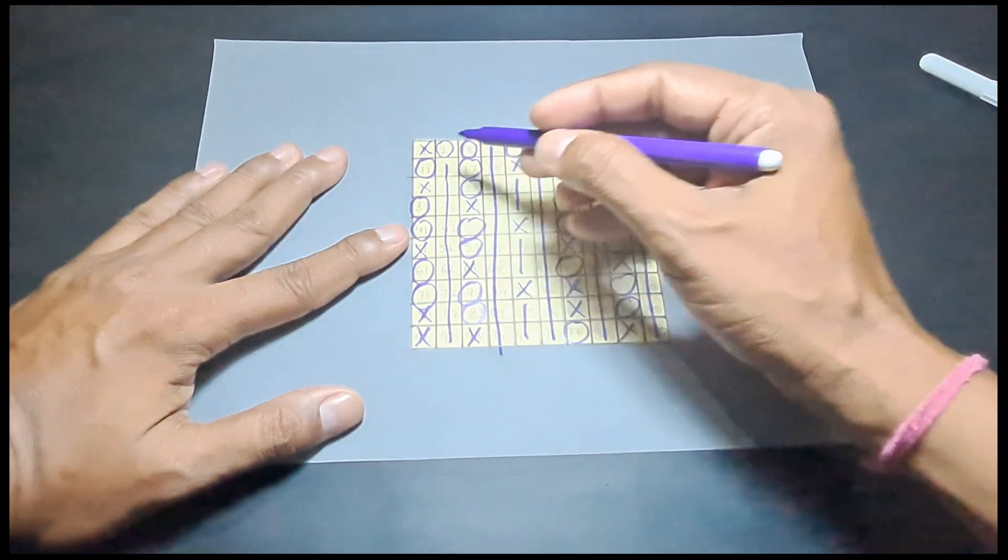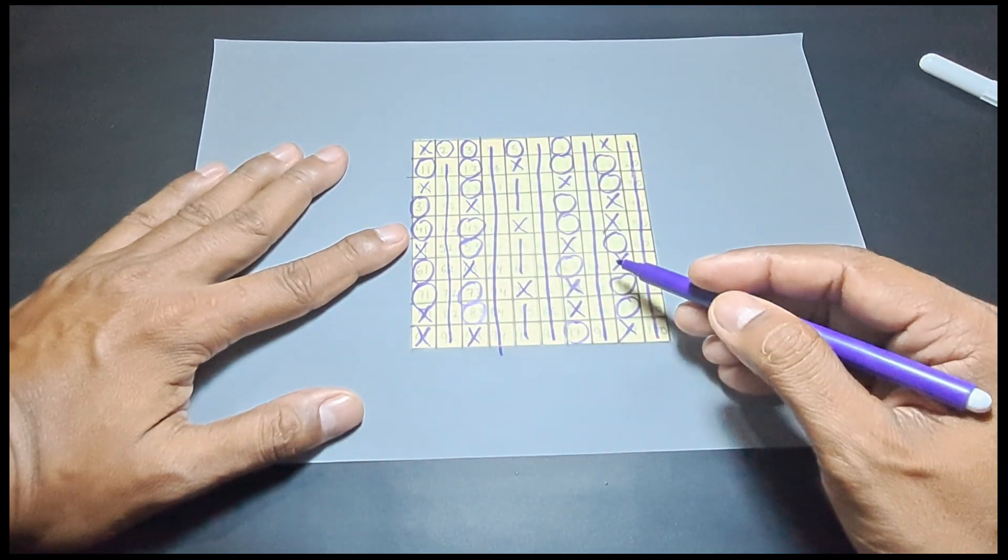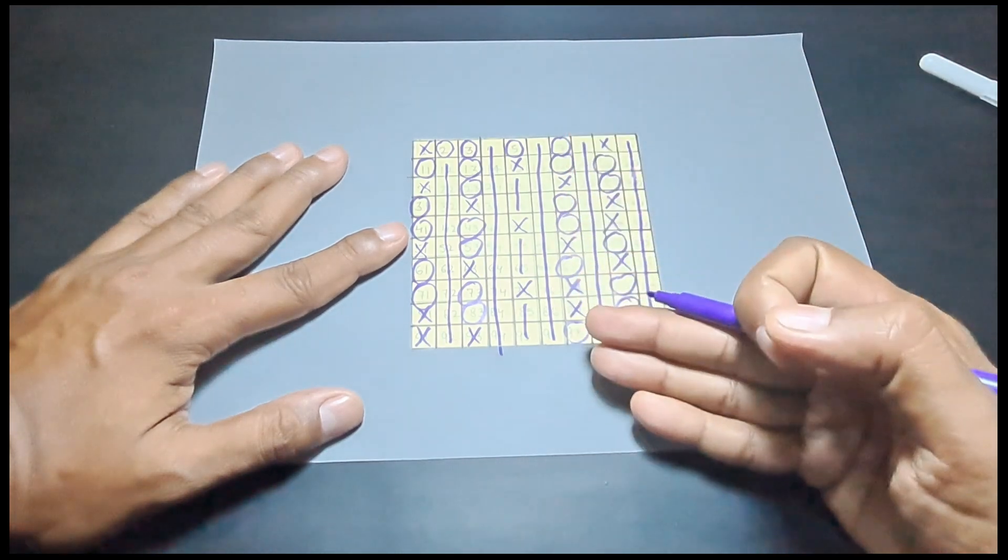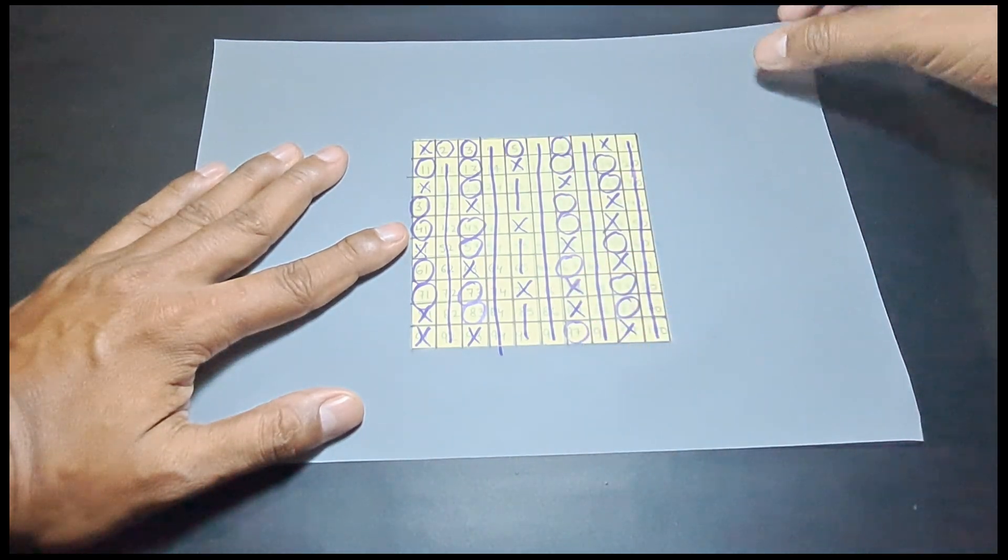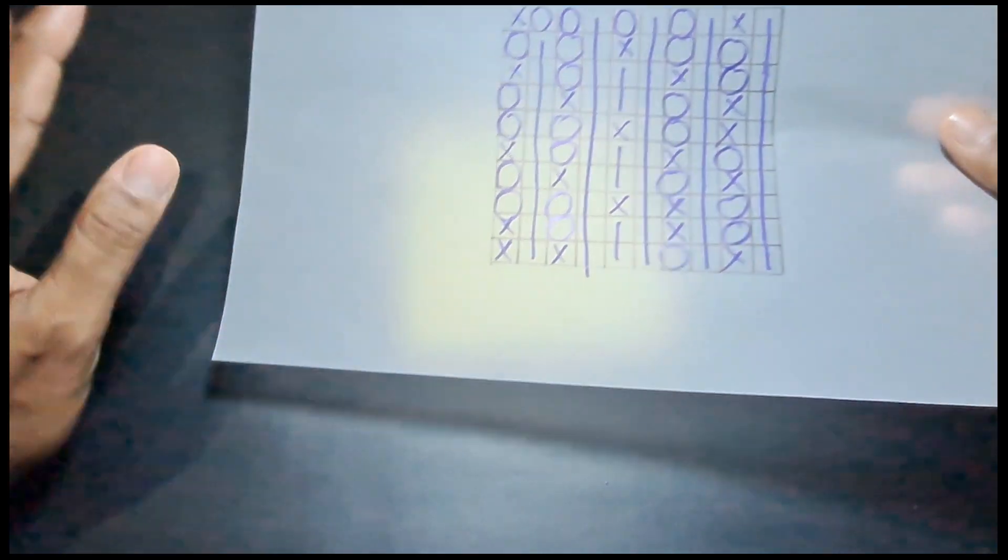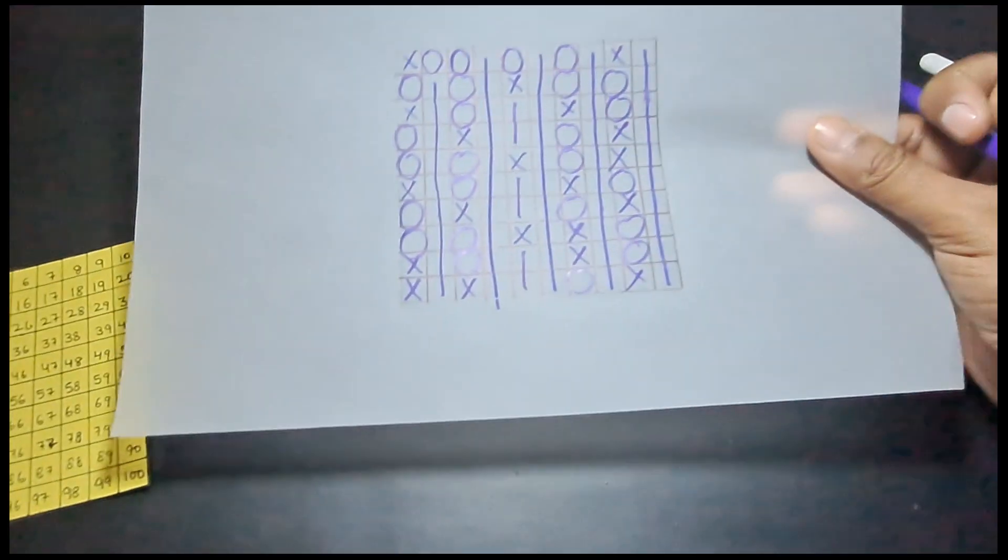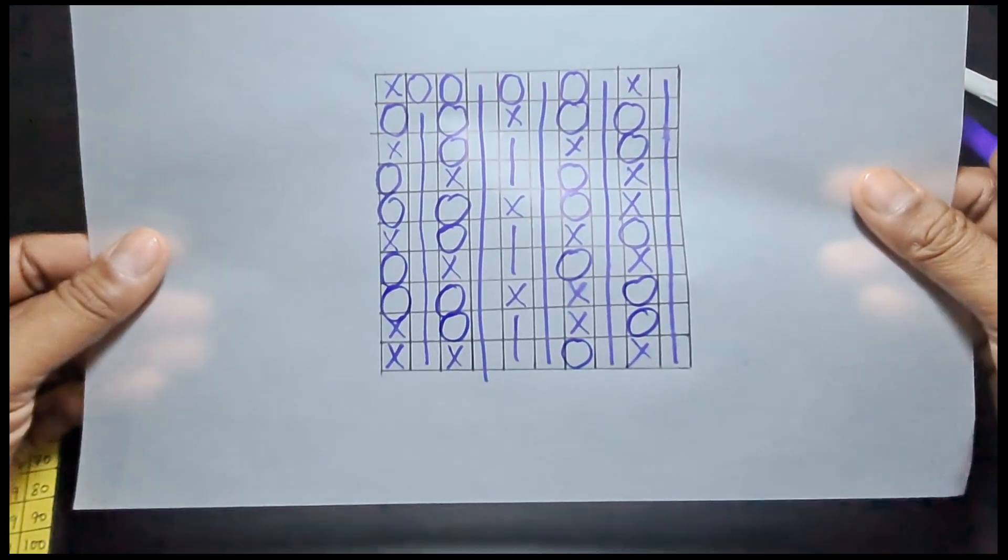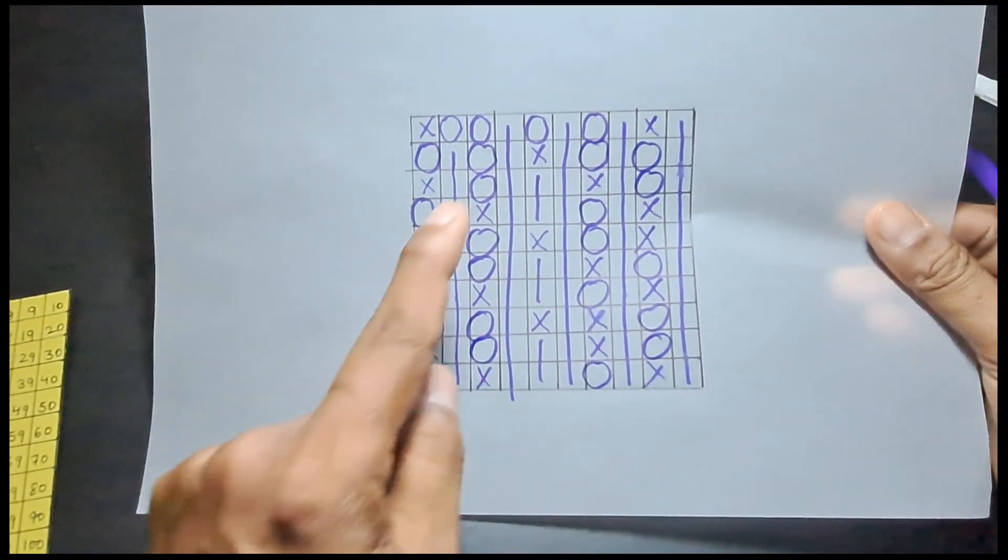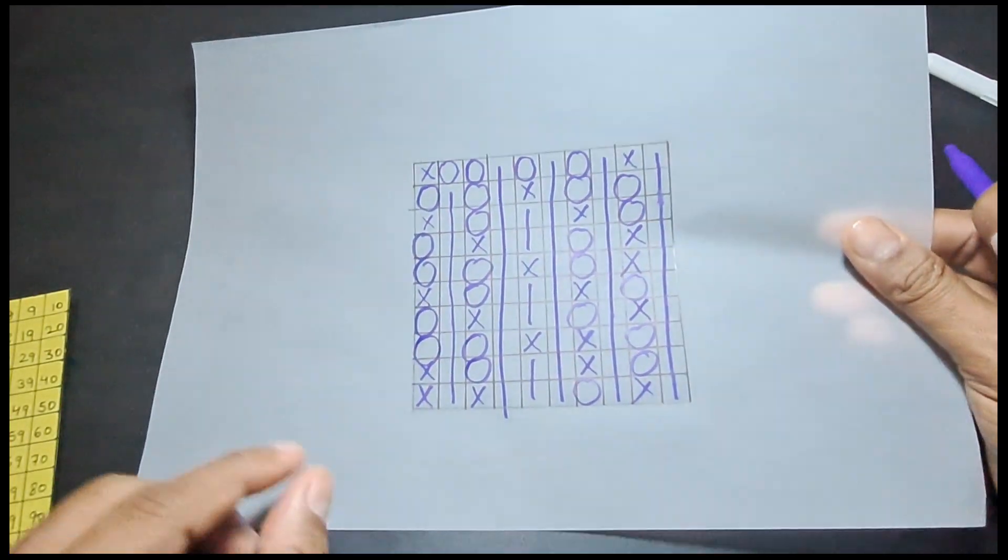So all the circled numbers give us the set of prime numbers. If you remove this sheet, the positions of the prime numbers will be indicated here. As you can see, we have obtained all the prime numbers and positions corresponding to these are all prime. That completes our activity on prime numbers.